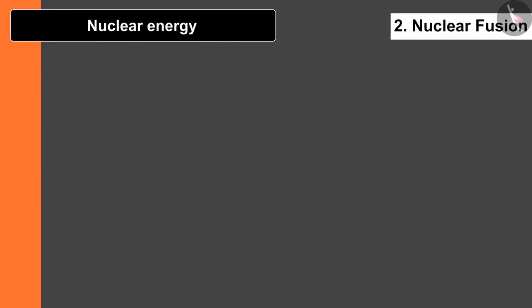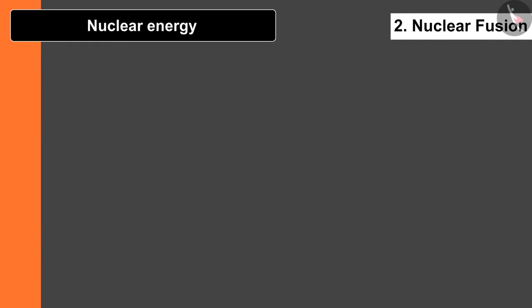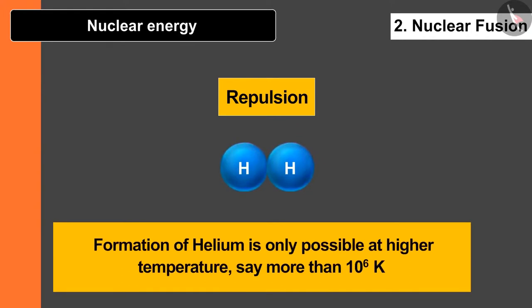In the second case, fusion takes place. Here two lighter nuclei fuse with each other to form a heavy nucleus, like hydrogen nuclei are fused to form helium. Due to the repulsion between the hydrogen nuclei, formation of helium is only possible at higher temperature, say more than 10 to the power 6 Kelvin.